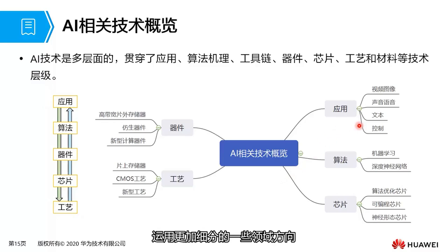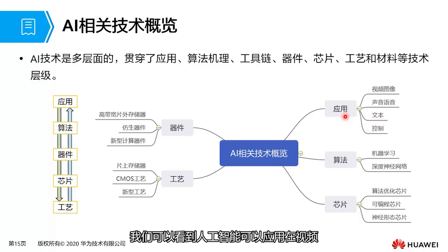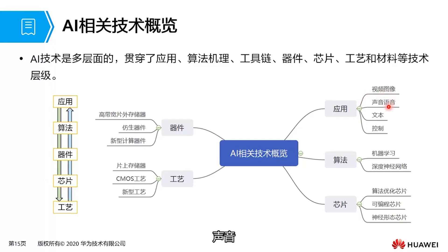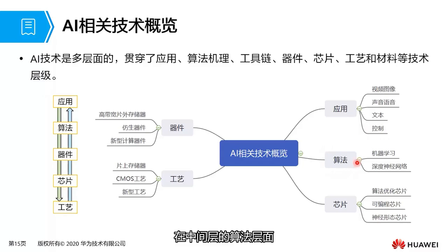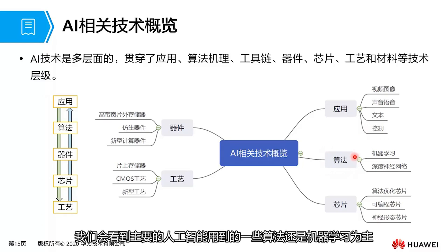In terms of some technologies related to artificial intelligence, it is applied in more refined areas. At the top-level application stage, we can see artificial intelligence being used in scenarios involving video images, sound, voice, text control, and so on.